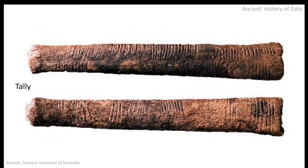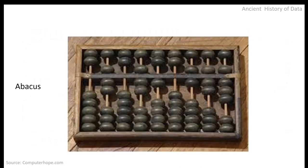They would compare the sticks and then know whether they had enough supplies. But really, the first calculator in the world was the Abacus — the first dedicated device constructed specifically to perform calculations. And this was in Babylon, where the first libraries also occurred.